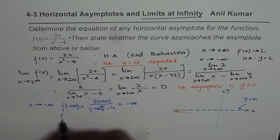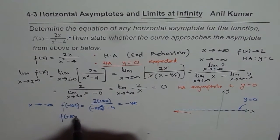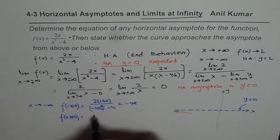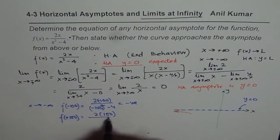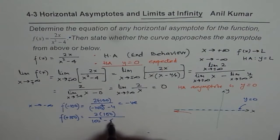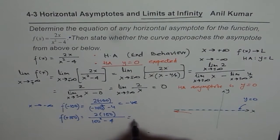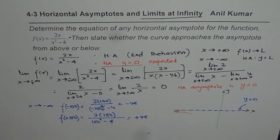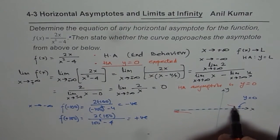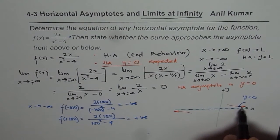Now for x = +100: we get 2 times 100 divided by 100 squared minus 4, which is positive. So that clearly shows that as x approaches positive infinity, the curve is approaching the asymptote from above.